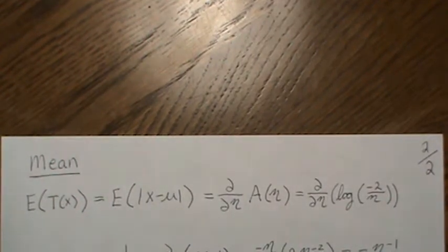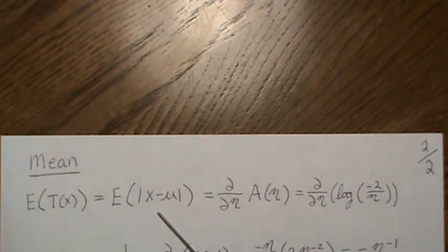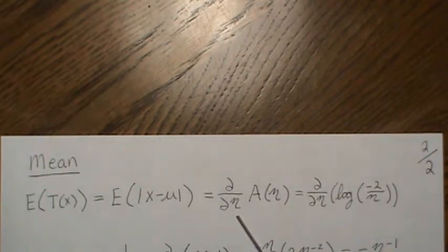The mean of our sufficient statistic, t of x, which is the absolute value of x minus mu, is the derivative of the log partition with respect to eta.